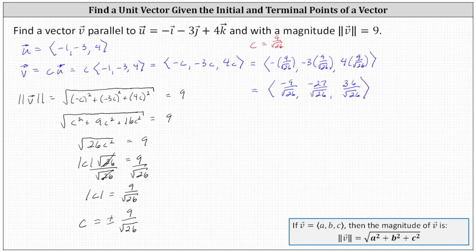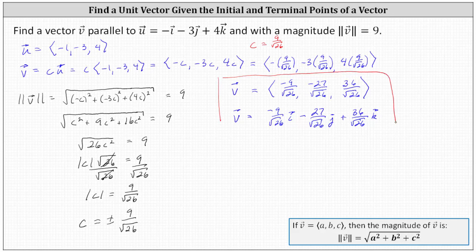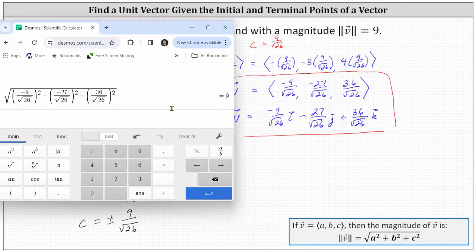We can also write vector v using the unit vectors i, j, and k: negative nine divided by the square root of 26 times unit vector i, minus 27 divided by the square root of 26 times unit vector j, plus 36 divided by the square root of 26 times unit vector k. Before we go, let's verify the magnitude of vector v is nine. Notice the magnitude of vector v is indeed equal to nine. I hope you found this helpful.